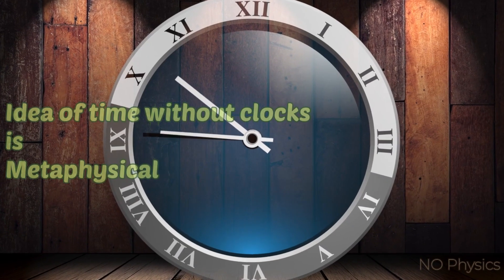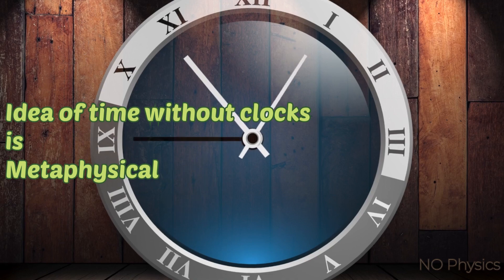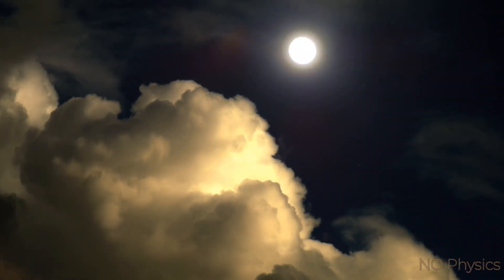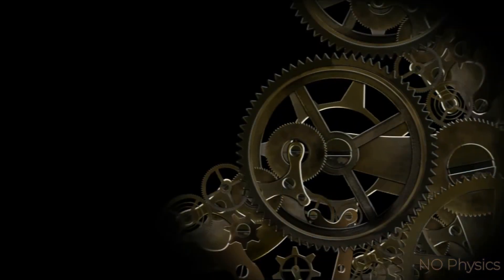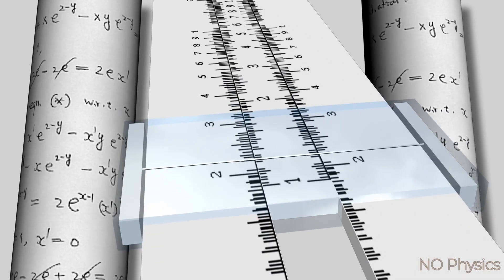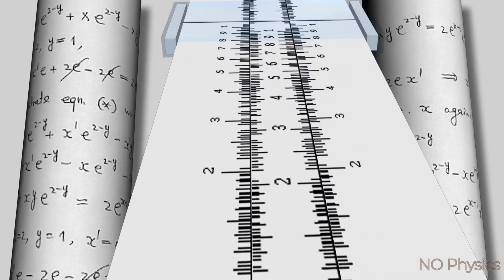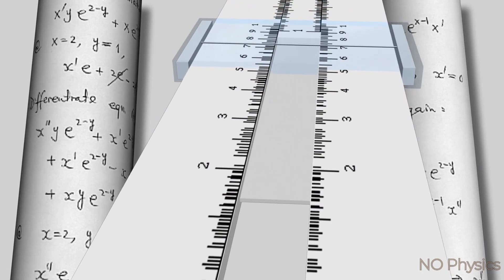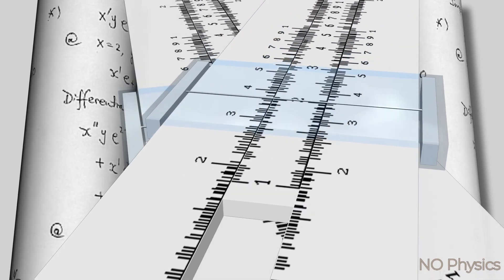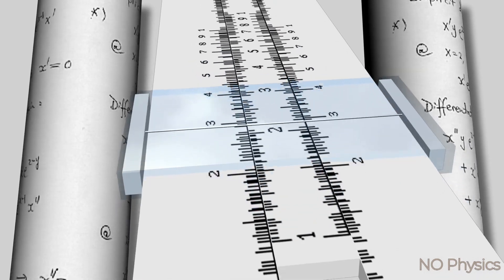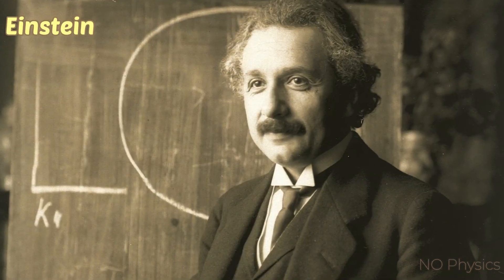Mach pointed out that Newton's idea of time without a clock is metaphysical. To understand the properties of time, we must observe the properties of clocks. He also argued that since position in space is determined with measuring rods, the properties of space can be understood only by investigating the properties of measuring sticks.